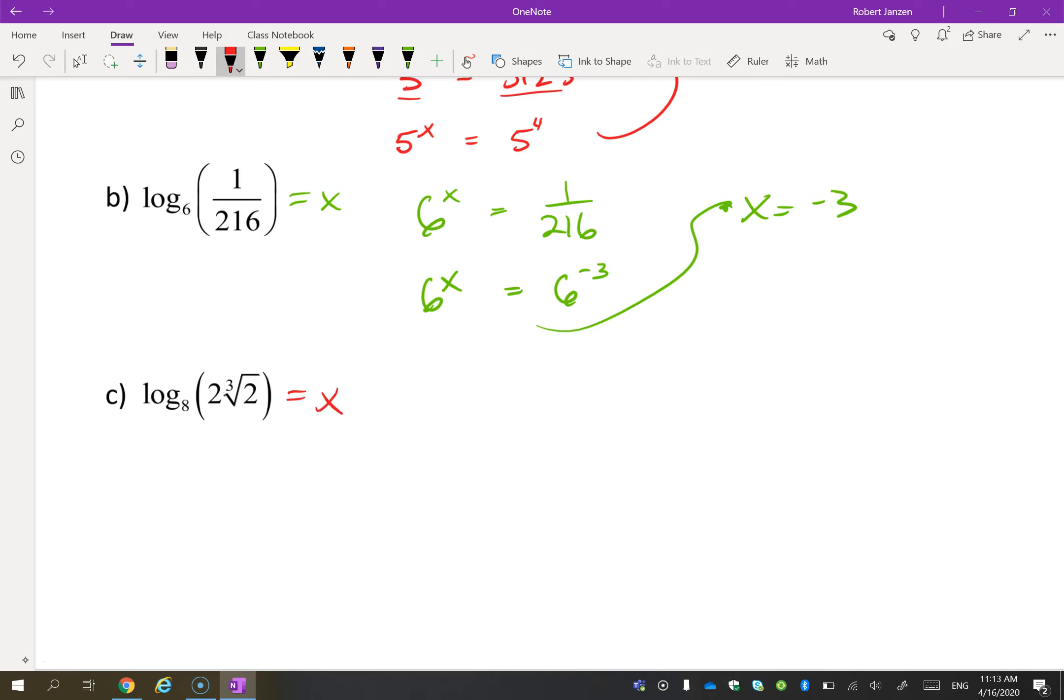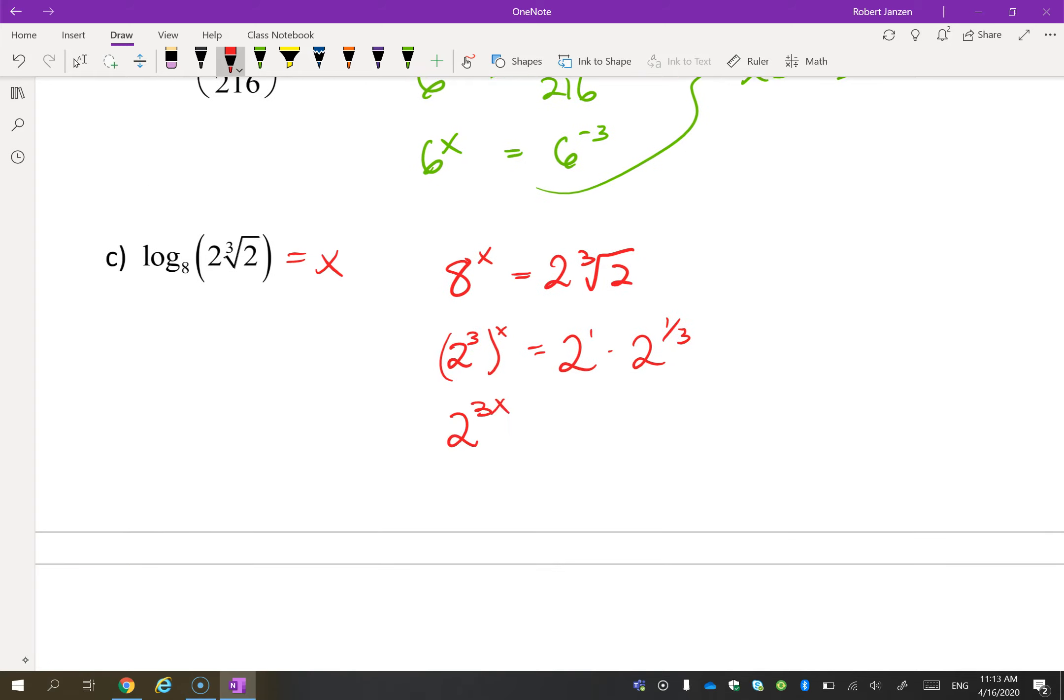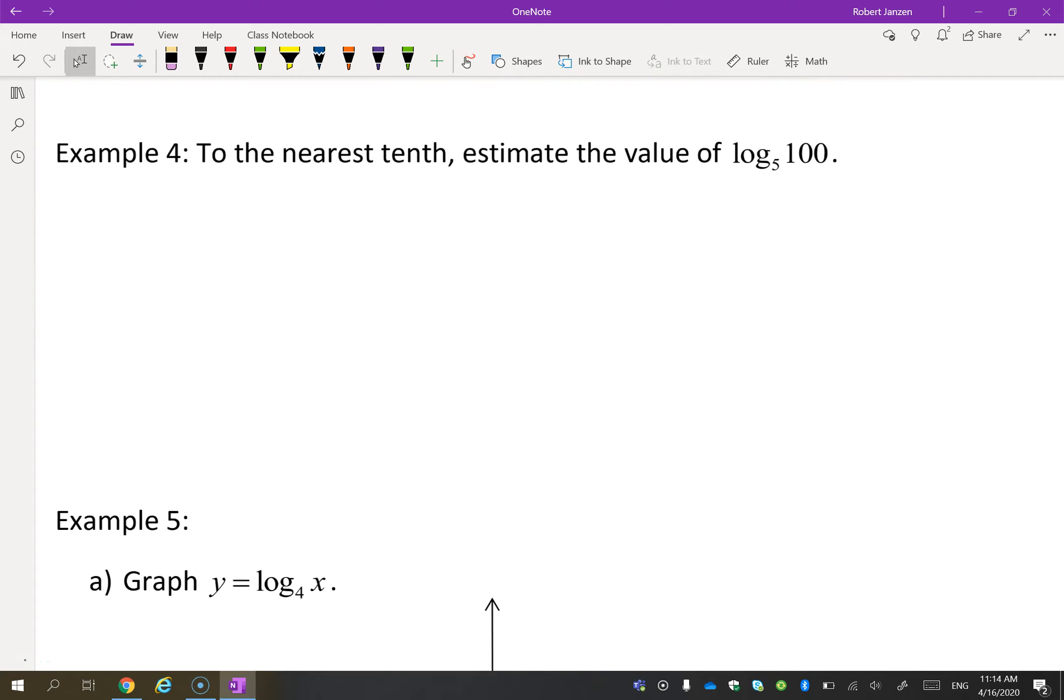This one's a little bit trickier. But again, we'll change the exponential equation. 8 to the power of x is 2 cubed root of 2. Now I need these all to be powers of 2. So I have 2 cubed to the power of x equals 2 to the power of 1 times 2 to the power of 1 third. So 2 to the 3x equals 2 to the 4 thirds. Remember, you add the exponents there. So 3x is 4 thirds. x is 4 ninths. If you're not sure how to get that, this is 4 thirds divided by 3, which is the same thing as 4 thirds times 1 third. So that's a bit of a review actually in there.